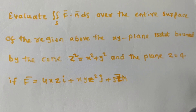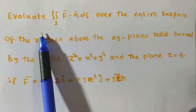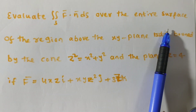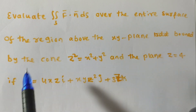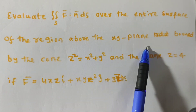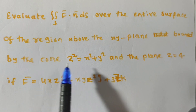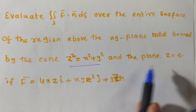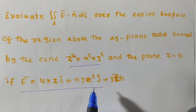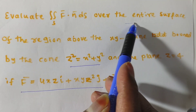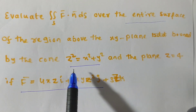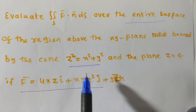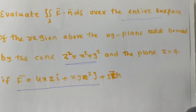Friends, the given problem is: evaluate the integral of F·n̂ dS over the entire surface of the region above the xy-plane bounded by the cone z² = x² + y² and the plane z = 4, where F is given. The key point is the entire surface bounded by z² = x² + y² and z = 4.